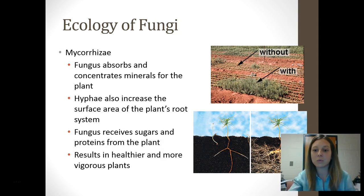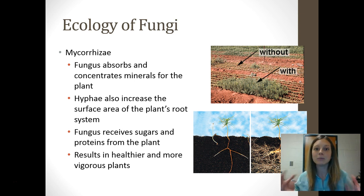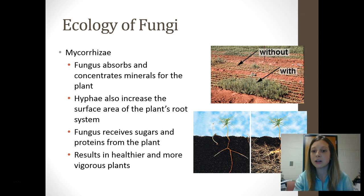Another example is mycorrhizae, where a fungus has wrapped around and covered the roots of a certain type of plant. Both benefit: the fungus gets sugars from the photosynthesizing plant, and the plant gets its root surface area increased by the fungi, so it can take in more nutrients. In the picture, you can see plants without mycorrhizae compared to plants with it — the plants growing with this relationship are much healthier, more vigorous, and lusher-looking.